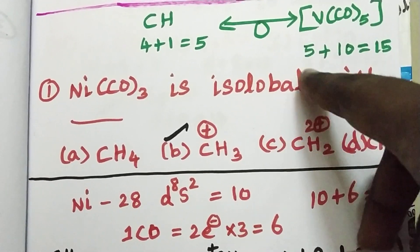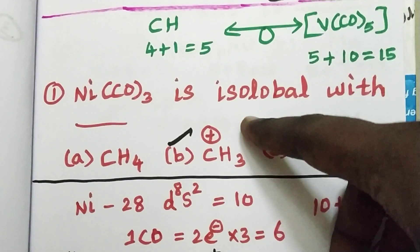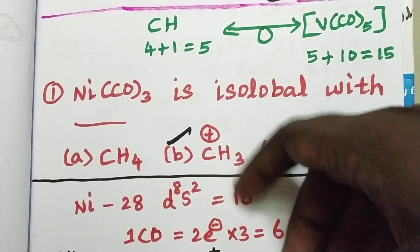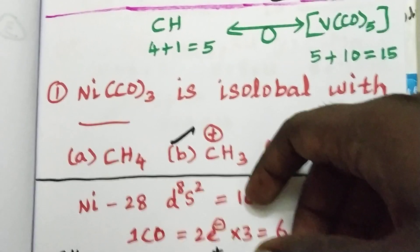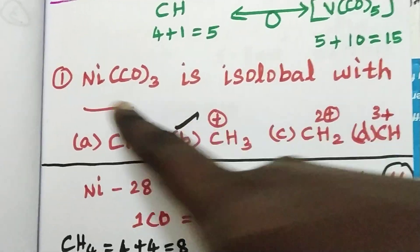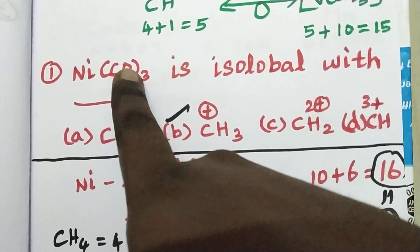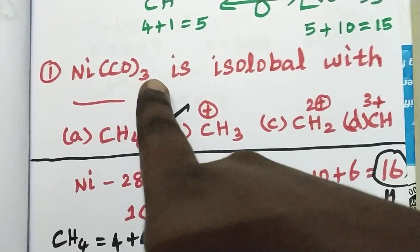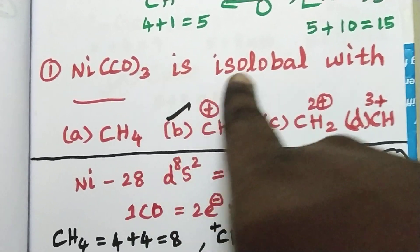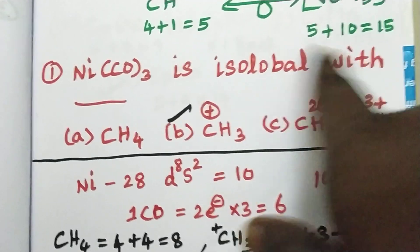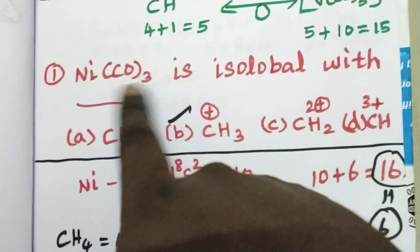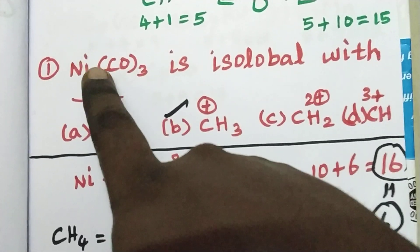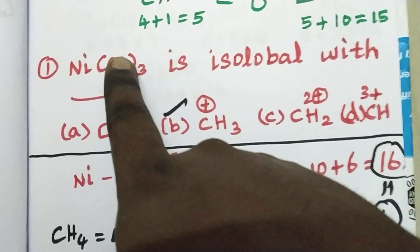Now let's look at the question. NiCO3 trice is isolobal with what? This is a d-block metal carbonyl compound. Let's look at the base of each fragment.